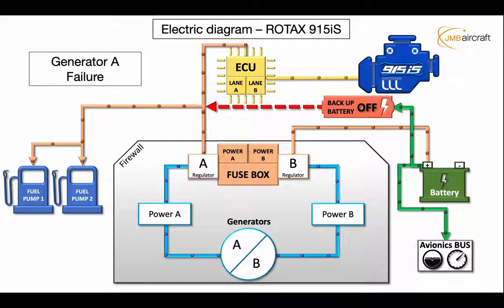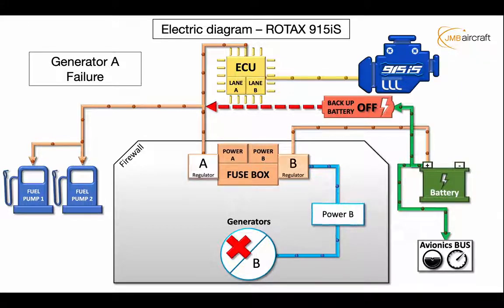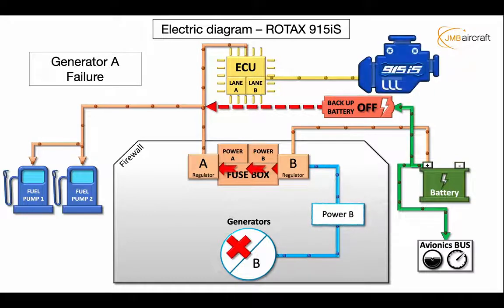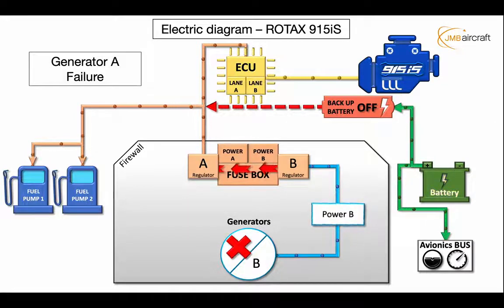So what happens if we lose generator A? Of course we will not have an engine failure. Generator B will take over the role of generator A, and it does this by transferring power from regulator B via the fuse box to regulator A. Once it does this it goes further into fuel pump 1, fuel pump 2, and then the ECU and the engine. Under these circumstances, when we don't have generator A, generator B will no longer be able to supply positive charge to the battery. This means all of our avionics, aircraft lights, and any other appliances hooked directly to the battery will no longer be receiving a positive charge. Many times this is not a big issue because a lot of equipment, for example a Garmin G5, will have its own backup battery and can run anywhere from 2 to 4 hours.